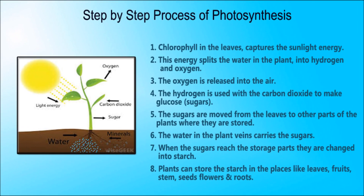Step-by-step process of photosynthesis: First of all, chlorophyll in the leaves captures the sunlight energy. This energy splits the water in the plant into hydrogen and oxygen. The oxygen is released into the air. The hydrogen is used with the carbon dioxide to make glucose or sugars. The sugars are then moved from the leaves to other parts of the plants where they are stored.